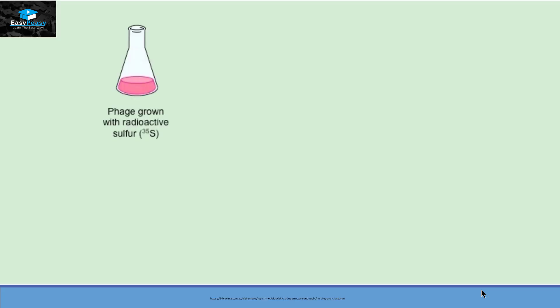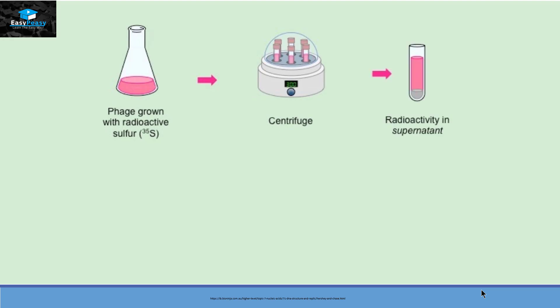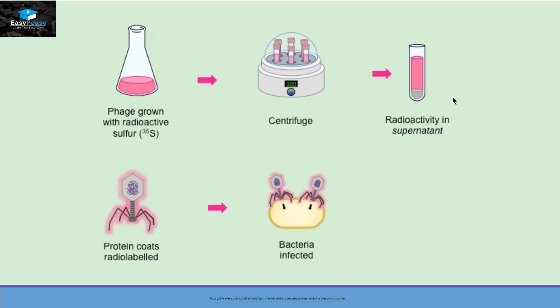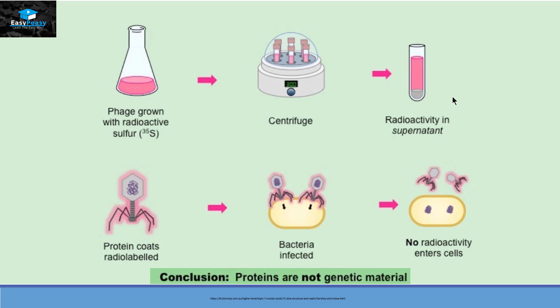Initially they cultured bacteriophage with radioactive sulfur-35. After the viruses replicated, they centrifuged the mixture and got a supernatant and a pellet. The pink color representing sulfur-35 was present in the supernatant and not in the pellet. This is because sulfur-35 incorporated into the protein part of the bacteriophage, which remained outside the bacteria. The protein-labeled viruses separated into the supernatant while the heavier bacteria formed the pellet. This concluded that proteins are not the genetic material.